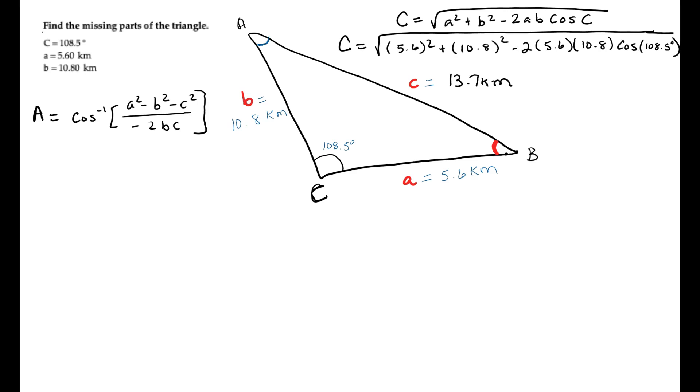So that's what angle A looks like. Now we're going to plug in what we know, the cosine inverse, and we're going to plug in the side lengths.